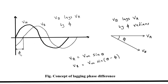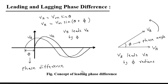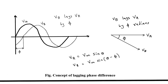The equation for Va is: Va = Vm sin(theta). The equation for Vb is: Vb = Vm sin(theta - Phi). In the case of lagging phase difference, the phase difference is negative. In the case of leading phase difference, the phase angle is positive — Vb = Vm sin(theta + Phi). And in the case of lagging phase difference, the phase difference is negative.